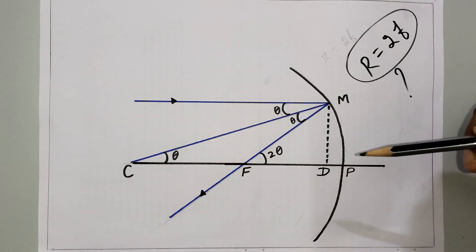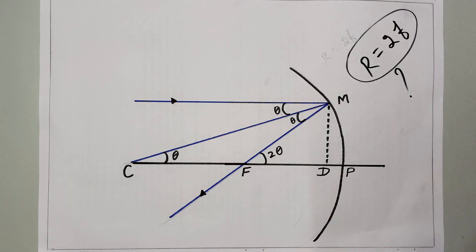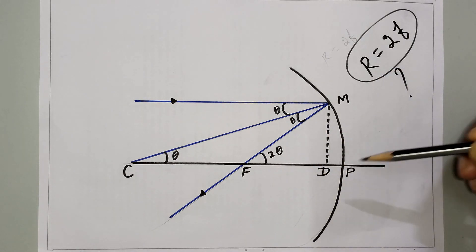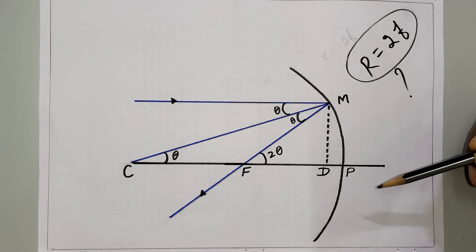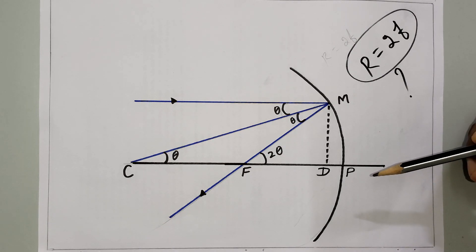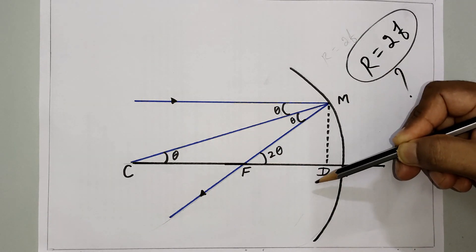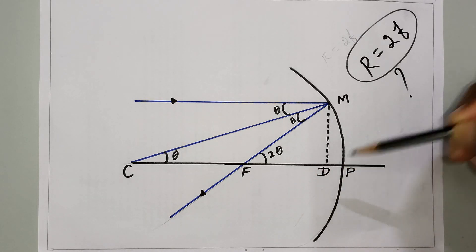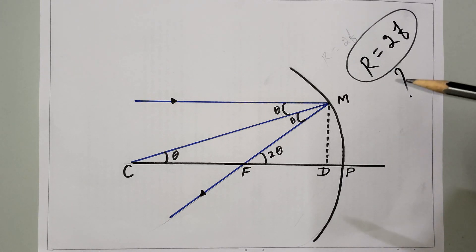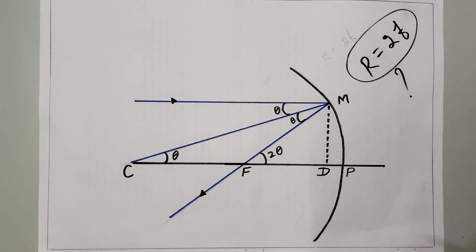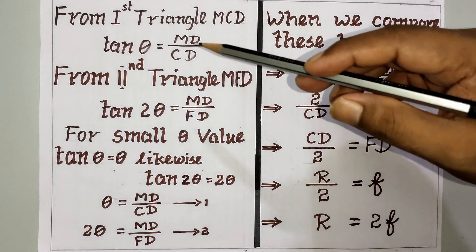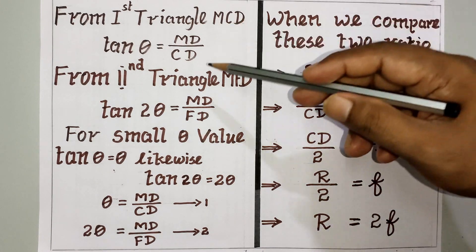Consider the two triangles MCD and MFD. These are right-angle triangles. In triangle MFD, FD is the base, which we approximate as the focal length. To solve, we can use tan theta. Recall that tan theta equals opposite side divided by adjacent side.